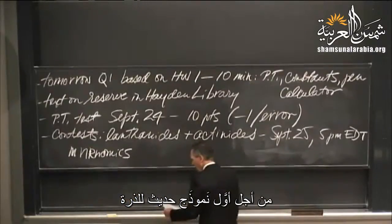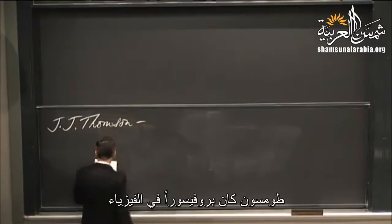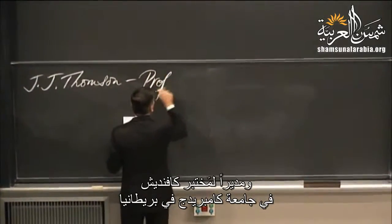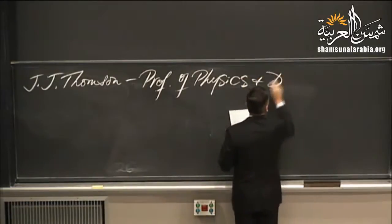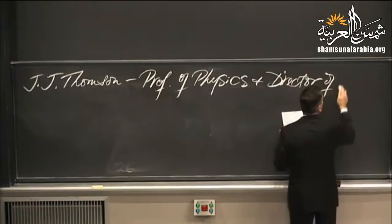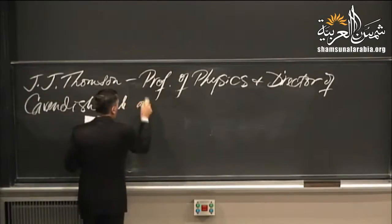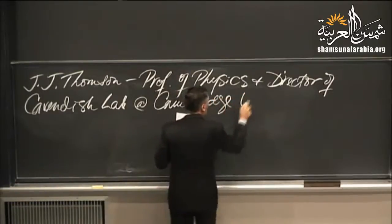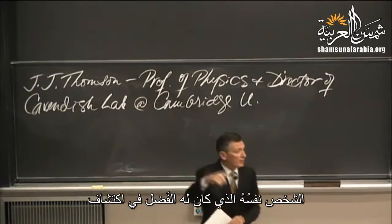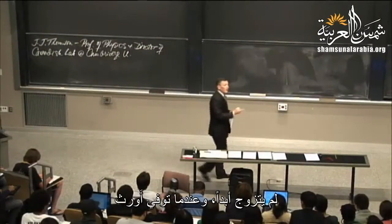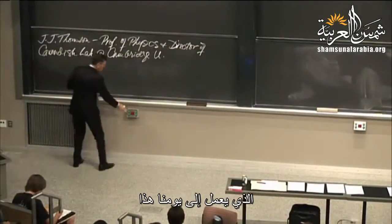For the first modern model of the atom, we go to J.J. Thomson — a professor of physics and director of the Cavendish Lab at Cambridge University. The Cavendish Lab was named after Henry Cavendish, the same one credited with the discovery of hydrogen in 1766. He never married, and when he died he bequeathed his fortune to Cambridge University, which used the money to establish the physics laboratory still in operation today.